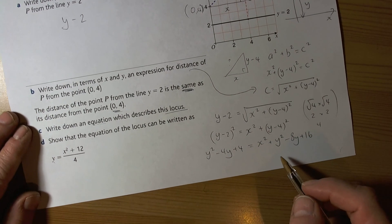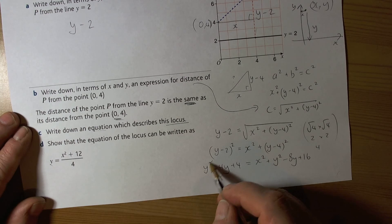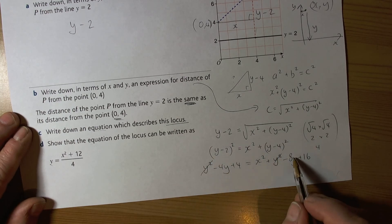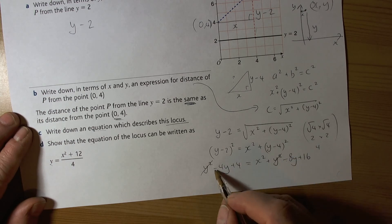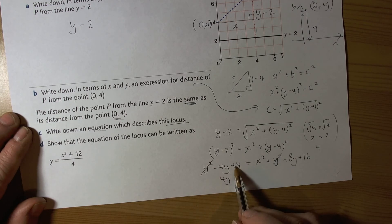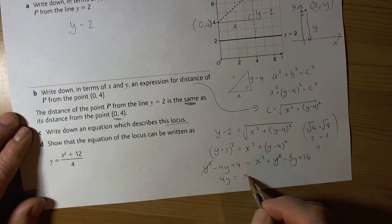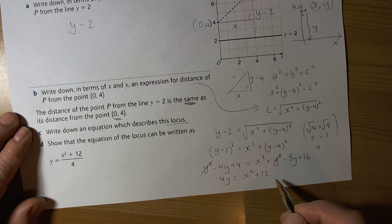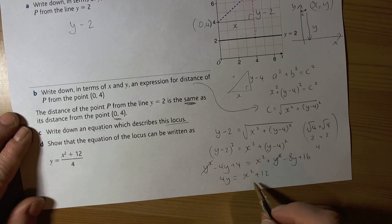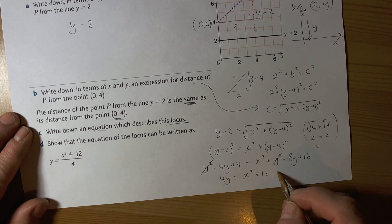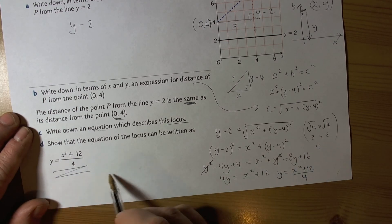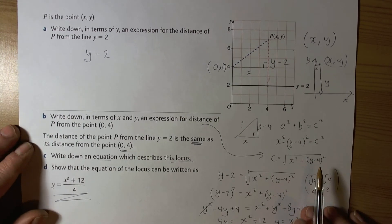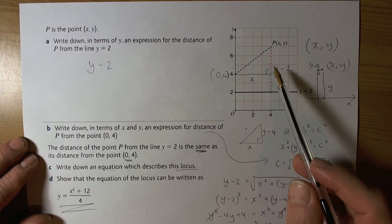Rearranging to make y the subject: cancel the y² terms from both sides. Add 8y to both sides to get 4y. Take away 4 from both sides: 4y = x² + 12. Divide everything by 4, so y = (x² + 12) / 4. That's the equation of the locus.